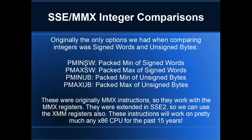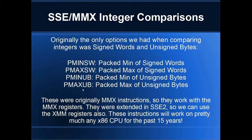That's packed min of signed words, packed max of signed words, packed minimum of unsigned bytes, and packed maximum of unsigned bytes. These were originally included in MMX. Only these four instructions will work with MMX registers as well, which is quite cool if you want to do 64-bit SIMD. They were later extended to include 128-bit operands in SSE 2, so you can use MMX or SSE registers with these particular instructions.